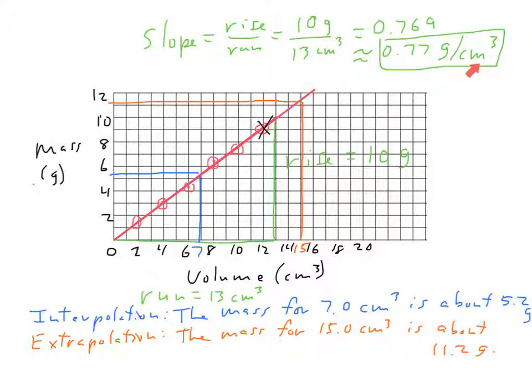Once I have that line, I can do interpolation. I can look at a data point between two existing data points, like the value of 7 between 6 and 8. I can go up here until I hit the line, then I can go across, and I can read what that value is. And that value is about 5.2 grams.